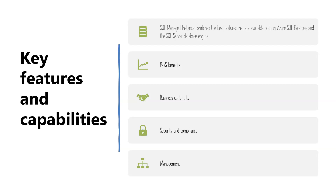Business continuity features include a 99.99% uptime SLA, built-in high availability and data protection with automated backups, customer configurable backup retention period, and user-initiated backups. The management feature includes Azure Resource Manager API for automating service provisioning and scaling, and Azure portal functionality for manual service provisioning, scaling, and data migration service.